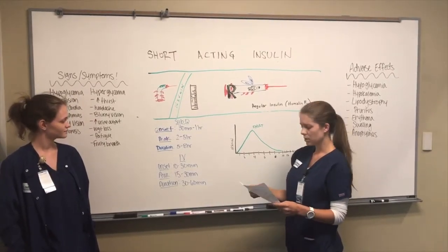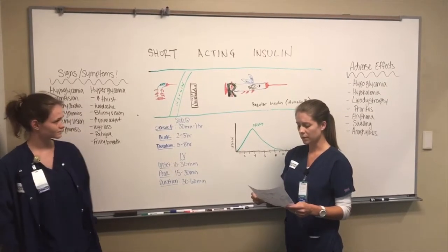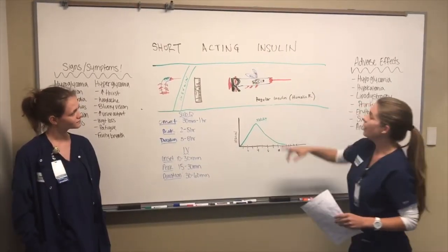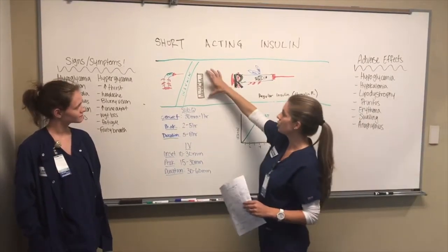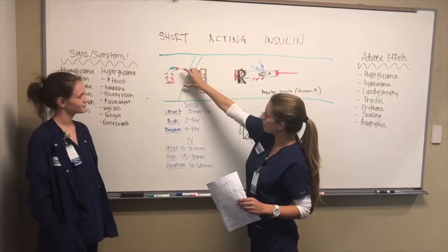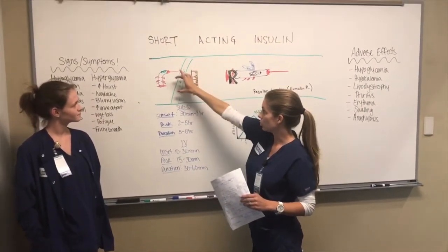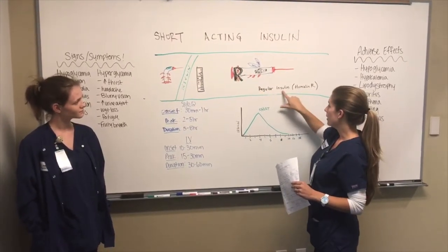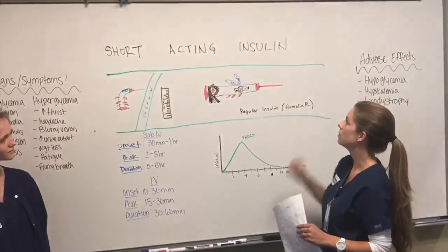As far as the sub-Q goes, you inject 30 to 45 minutes before a meal to ensure the onset of action coincides with meal absorption. We have a picture that represents short acting — a short ruler next to the short insulin insect — to represent short acting. And then we have the big R that represents regular insulin and the name Humulin, with a little human representing the Humulin in the injection.